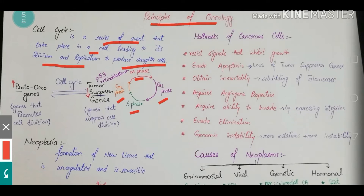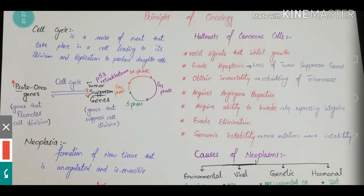Proto-oncogenes promote cell division, and tumor suppressor genes suppress cell division. When there is a normal balance between these two genes, a normal cell cycle will proceed. But if by any mutation there is an increase in proto-oncogenes, or a decrease in tumor suppressor genes, the cell cycle will have an imbalance and it will proceed towards carcinoma.